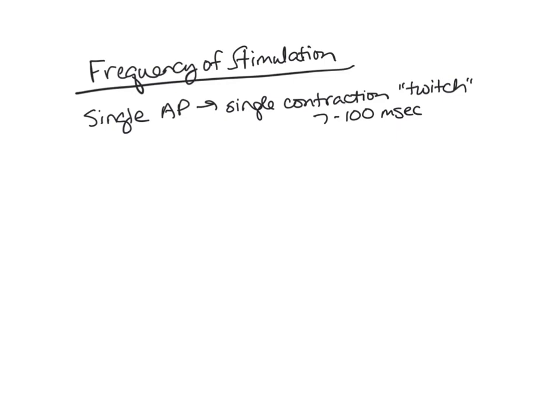However, if another action potential causes another twitch to occur before the tension returns to zero, the tension will peak at an even higher level because additional cross bridges form. Think about pushing a child on a swing — you push gently to start it moving, but the second time you push, the child goes higher, and the third time even higher. So if you get an additional action potential causing an additional twitch, it just builds that tension. Most muscular contractions involve sustained muscular contractions rather than individual twitches.